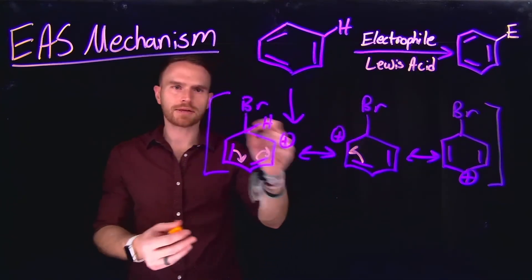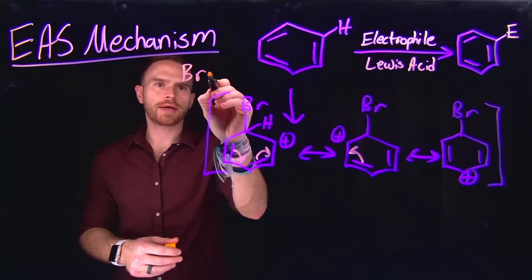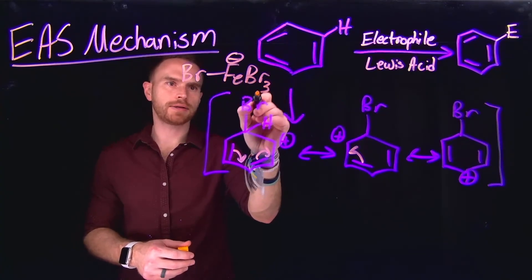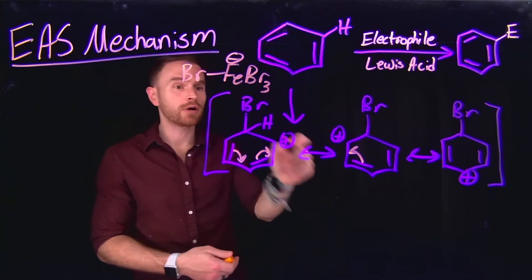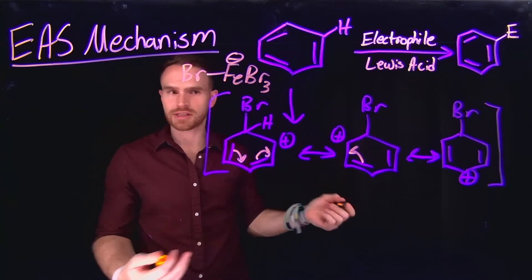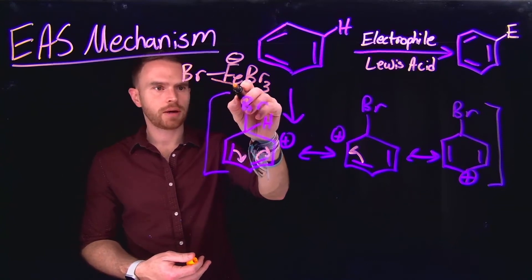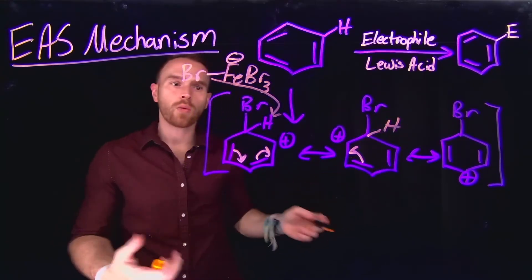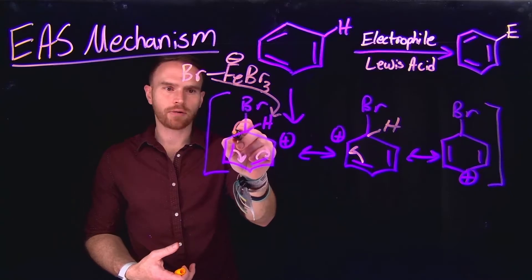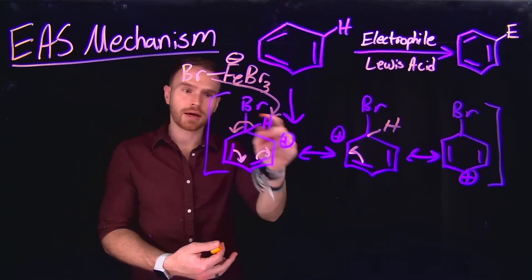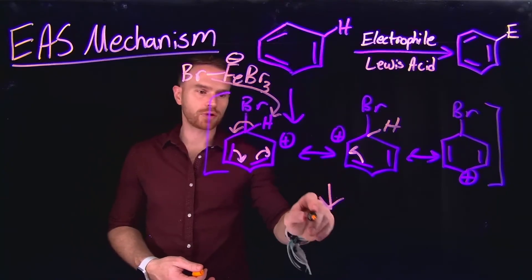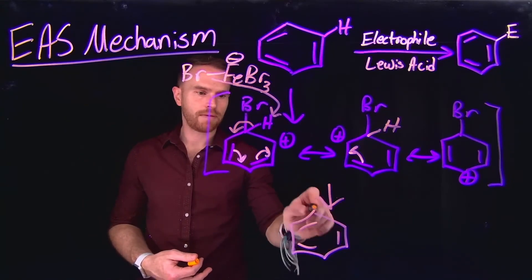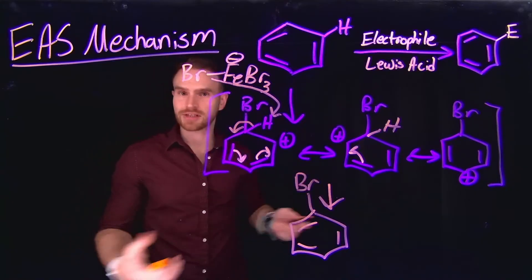Recall that our activated Lewis acid is still present, with a bromine attached to it left behind. This can now act as a nucleophile towards one of the hydrogen atoms on our six-membered ring. If it were to come down and deprotonate, the electrons would kick back into the conjugated pi system, producing our product — halogenation, specifically bromination — via an electrophilic aromatic substitution mechanism.